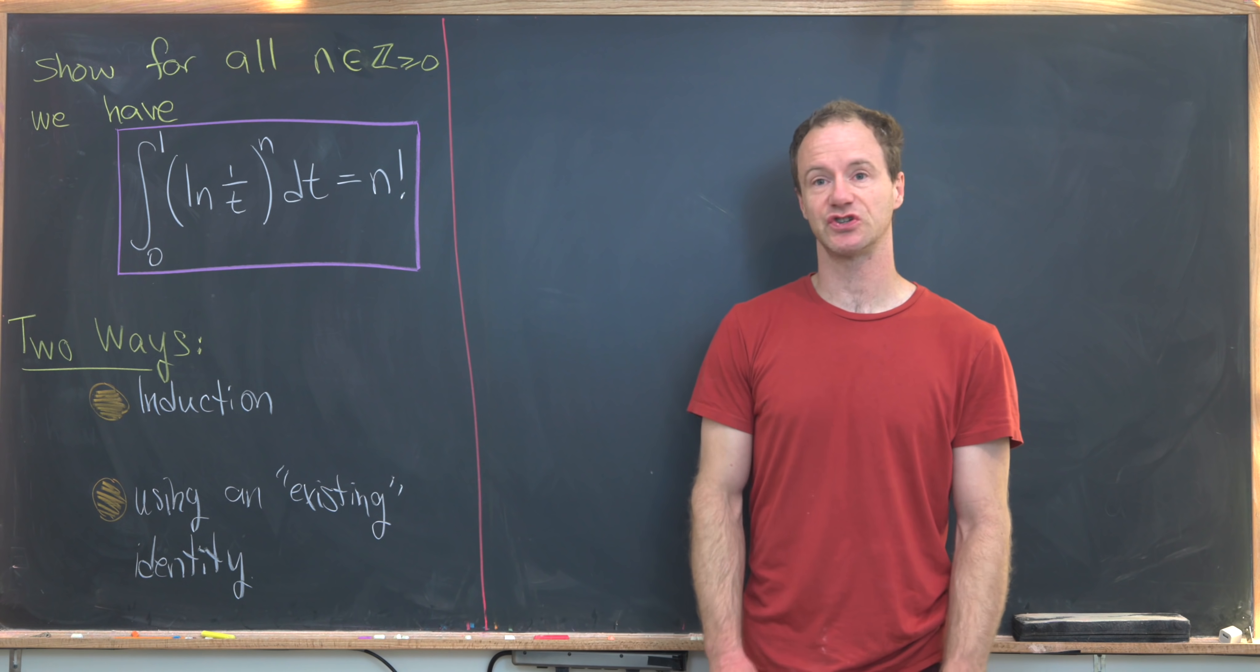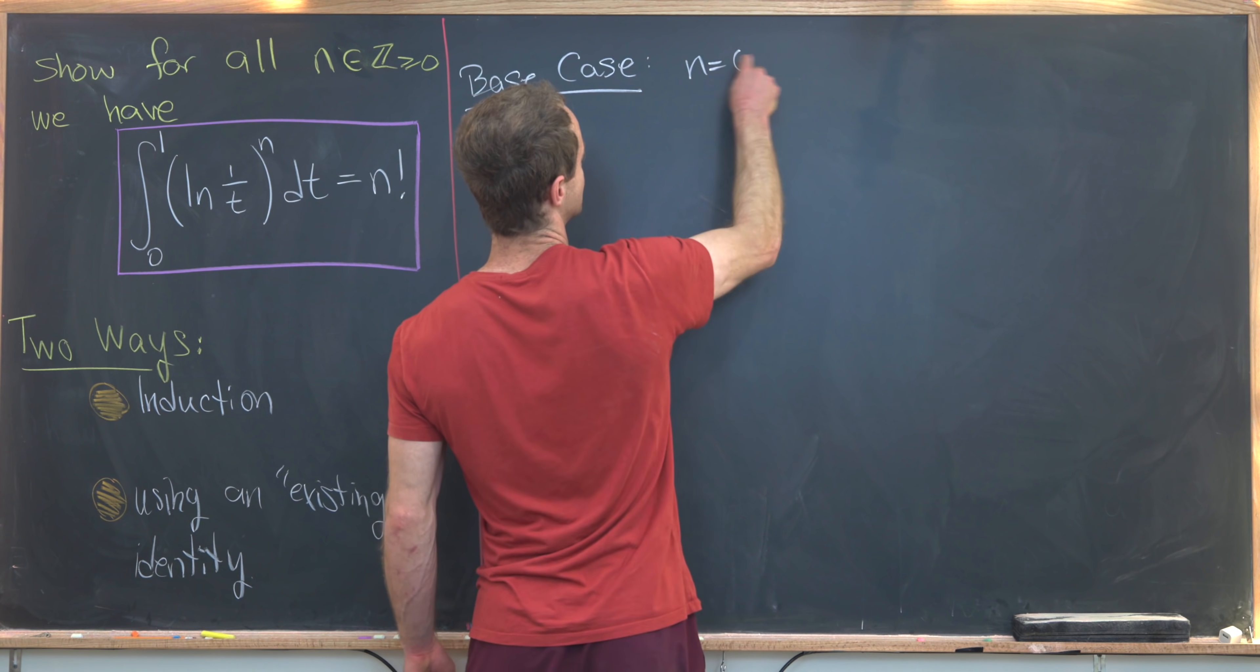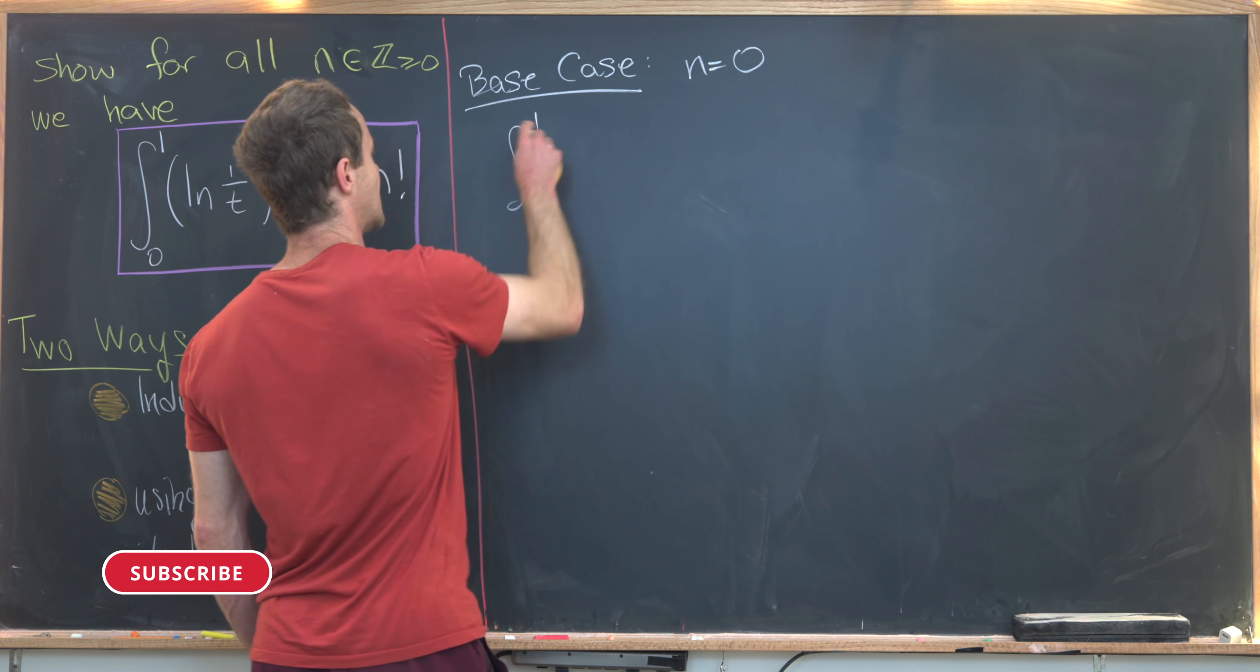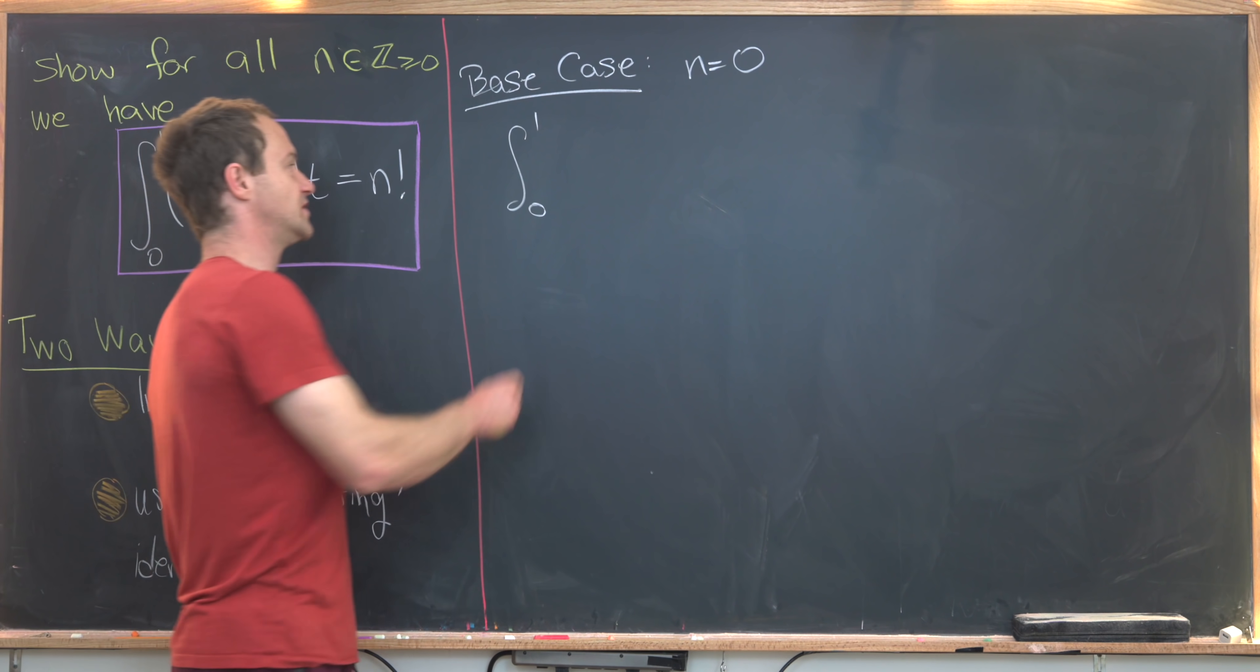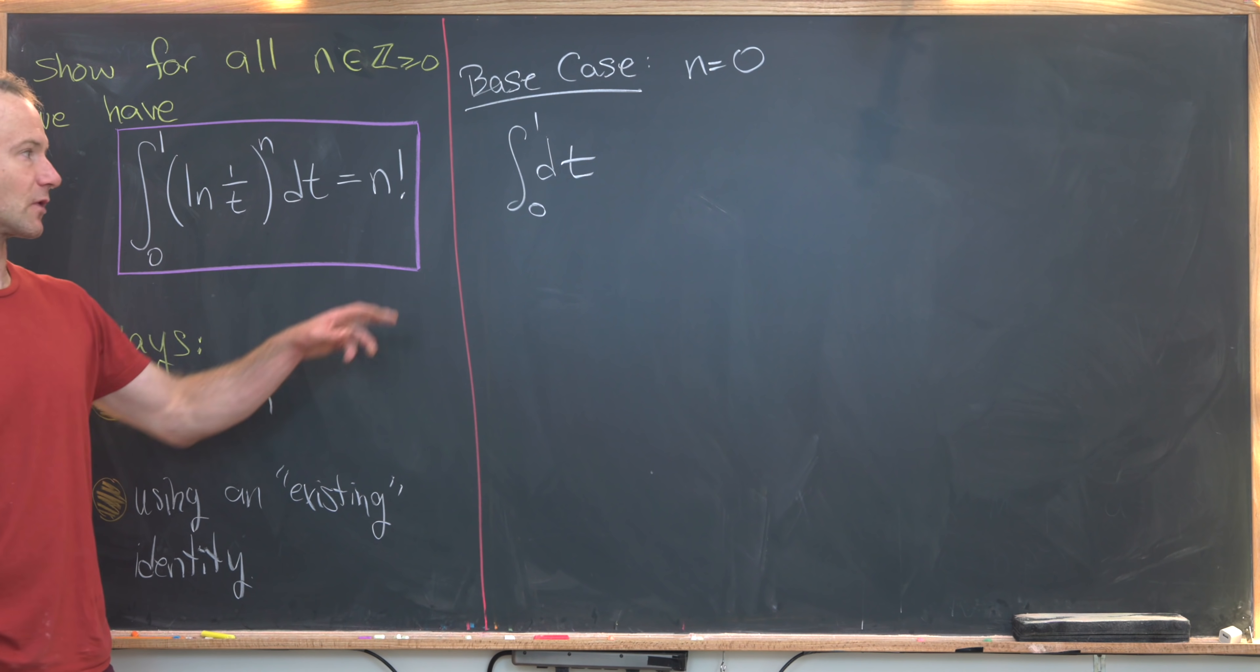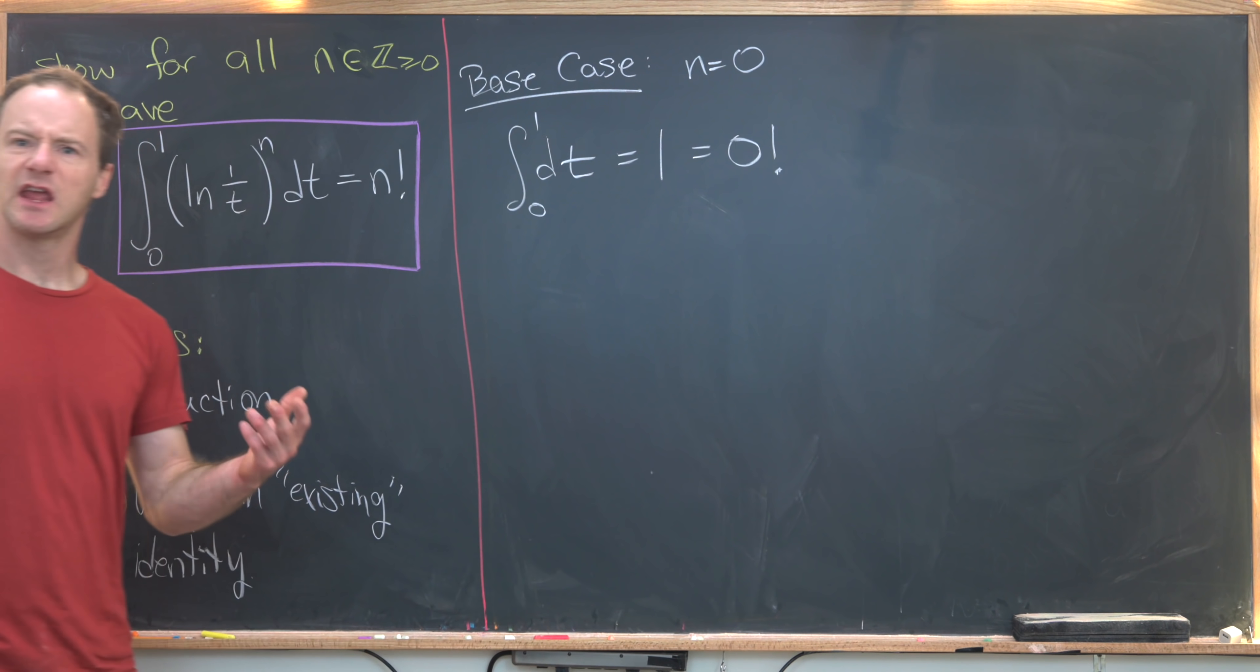So let's look at this first strategy, which is induction. We'll take our base case to be the smallest case, which is n equals 0. But that's actually really nice, because if we have n equals 0, our integral collapses to natural log of 1 over t to the 0, which is just the number 1. So we're just integrating the number 1 over the interval 0 to 1. That clearly gives us 1, which is equal to 0 factorial. Here we have to recall that 0 factorial is, of course, 1.